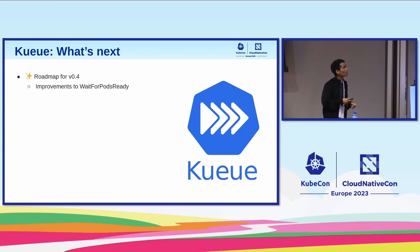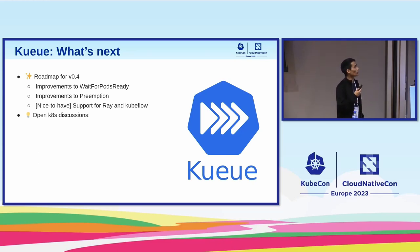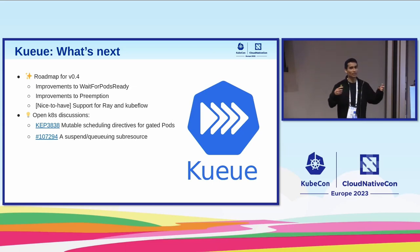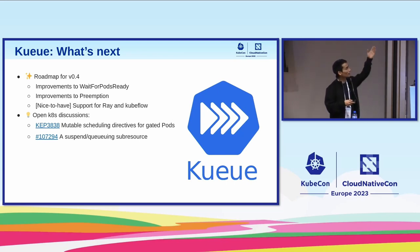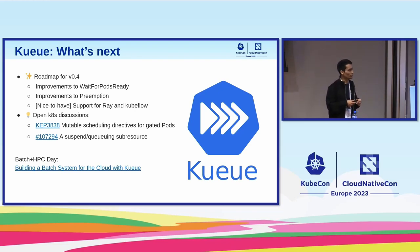The latest version is 0.3, released a couple of weeks ago. For the 0.4 roadmap, we have improvements to existing features, a PR opening in the Ray operator for integration, and work with the Kubeflow community to support more APIs. The design principle is that if something doesn't work in the scheduler or job controller, we propose fixes on those components so we can implement higher-level decisions in Kueue. You can watch our Tuesday presentation at the batch and HPC day to learn more.